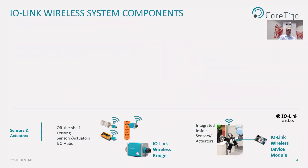So let's first understand what are the components of an IO-Link Wireless solution. At the device level, there are two options for creating IO-Link Wireless devices. The first is to connect an IO-Link Wireless bridge to off-the-shelf devices. These can be either IO-Link or digital devices, and the bridge can be connected to sensors, to actuators, and even to IO hubs, thus enabling multiple IO devices to transmit wirelessly through a single bridge.